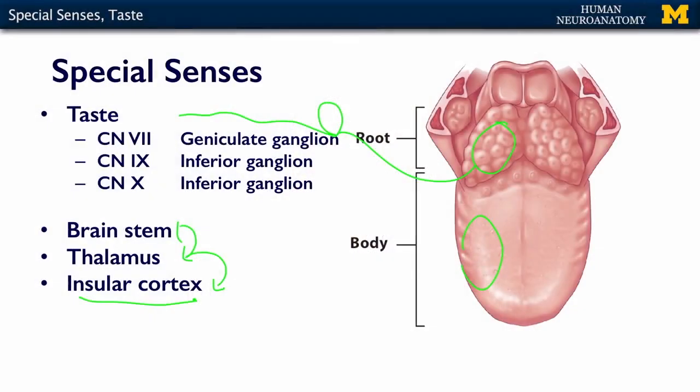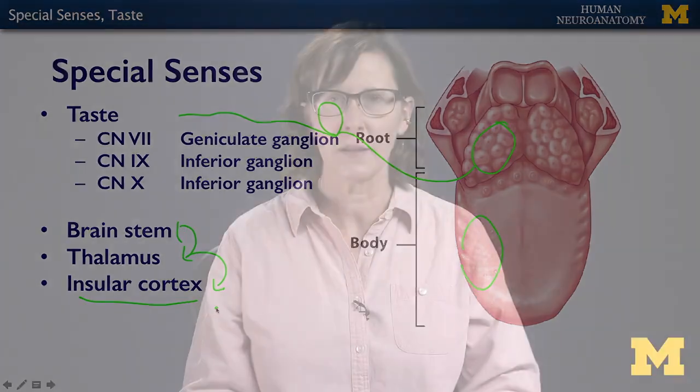To summarize: taste receptors have their cell bodies in the geniculate ganglion or the inferior ganglia of cranial nerves 9 and 10. They relay in the brainstem to the thalamus, and then up to the insular cortex for perception. In the last segment of this lecture, we'll talk about your sense of balance and your sense of hearing.